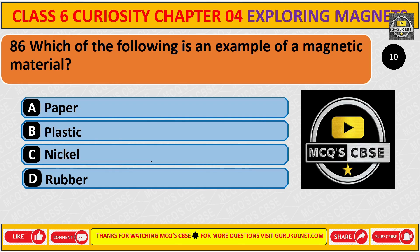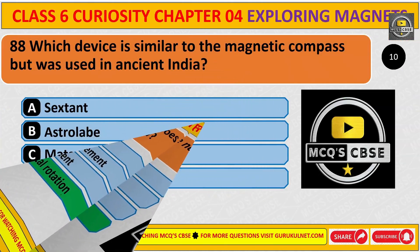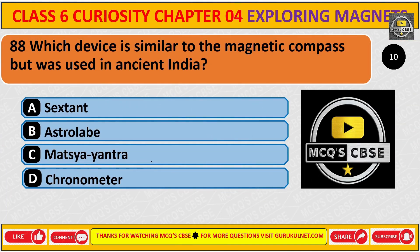Which of the following is an example of a magnetic material? What type of motion does the needle in a magnetic compass show? The correct answer is D. Horizontal rotation.